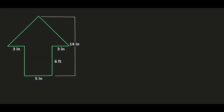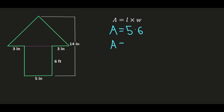In this example of a composite figure, I have a shape that looks like an arrow. I can see there's a triangle on a rectangle, but they didn't divide this shape up for me. When that happens, you can place your line to divide the composite figure into individual shapes wherever you want. In this example, it makes sense to put the line here and turn this composite figure into a triangle and a rectangle. I'm going to start by finding the area of the rectangle: area equals length times width. I'll use 5 for the length times 6 for the width, giving me area equals 5 times 6, which is 30. So the area of the rectangular portion of this composite figure is 30.